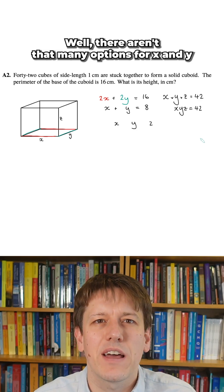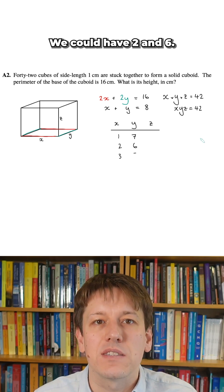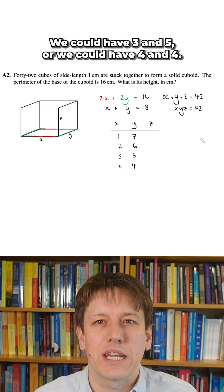So how can we make this work? Well, there aren't that many options for x and y when they're whole numbers that add together to give 8. We could have 1 and 7, we could have 2 and 6, we could have 3 and 5, or we could have 4 and 4.